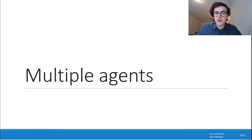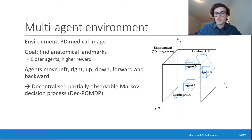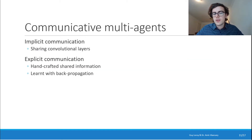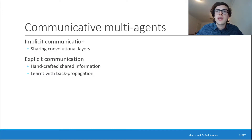Now that we've presented how a single agent works, let's move on to multiple agents. The environment is very similar, but now we have multiple agents and potentially multiple landmarks. Agents move in the same way and receive rewards similarly. This is known as a decentralized partially observable Markov decision process, with decentralized coming from the fact that we have multiple agents. The naive way is to have non-communicating multiple agents working in parallel, but using communication can tremendously increase accuracy. We can have implicit communication by sharing weights, such as in the convolutional layers, or explicit communication — for example, handcrafting shared information so agents can communicate their relative distance to each other, or using an alert communication channel via backpropagation.